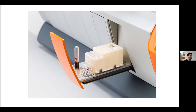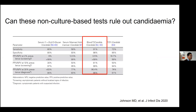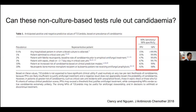The sensitivity of T2-MR is much better than the beta-glucan assay or PCR, and the specificity is also excellent. As expected, the PPV increases with increasing prevalence and the negative predictive value remains extremely high — it's a really good rule-out test and, depending on the scenario, a useful rule-in test too. Cost is a major issue, and I'm not aware of any lab in South Africa currently using this.